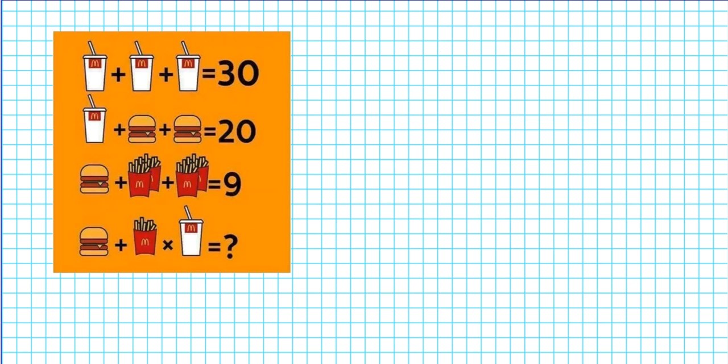Let's start by reading this problem. The problem is presented to us in a pictorial format. Drink plus drink plus drink equals 30. A drink plus a burger plus a burger equals 20. A burger plus two fries plus two fries equals 9. And then a burger plus a fry times a drink equals what? So we have to figure out what the resulting number is in the fourth equation.